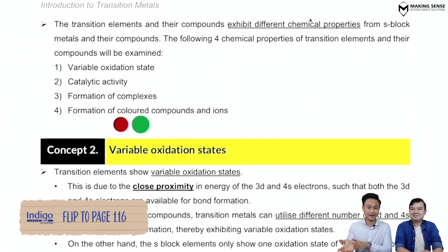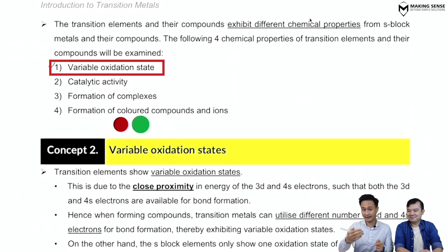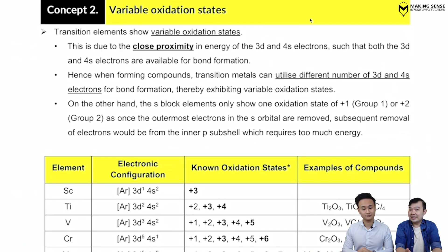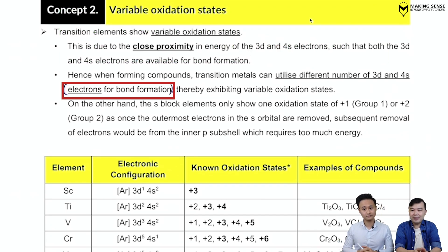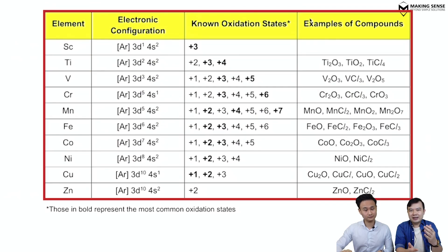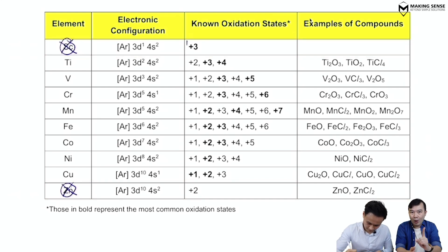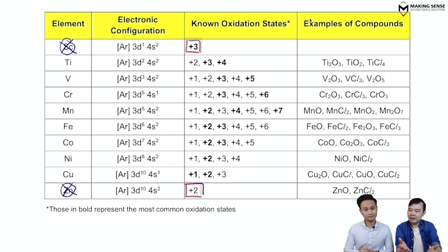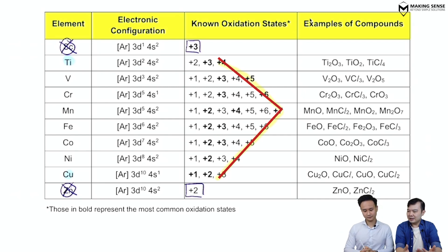Now for chemical properties — there are four of them, and we'll cover the first one: variable oxidation states. The oxidation state refers to the number of electrons used for bonding, whether ionic or covalent. For transition metals, elements can form variable oxidation states. Looking at the table: scandium and zinc only exhibit one oxidation state each (not transition metals), while titanium through copper all show variable oxidation states. There is a clear trend in the maximum oxidation state across the series.